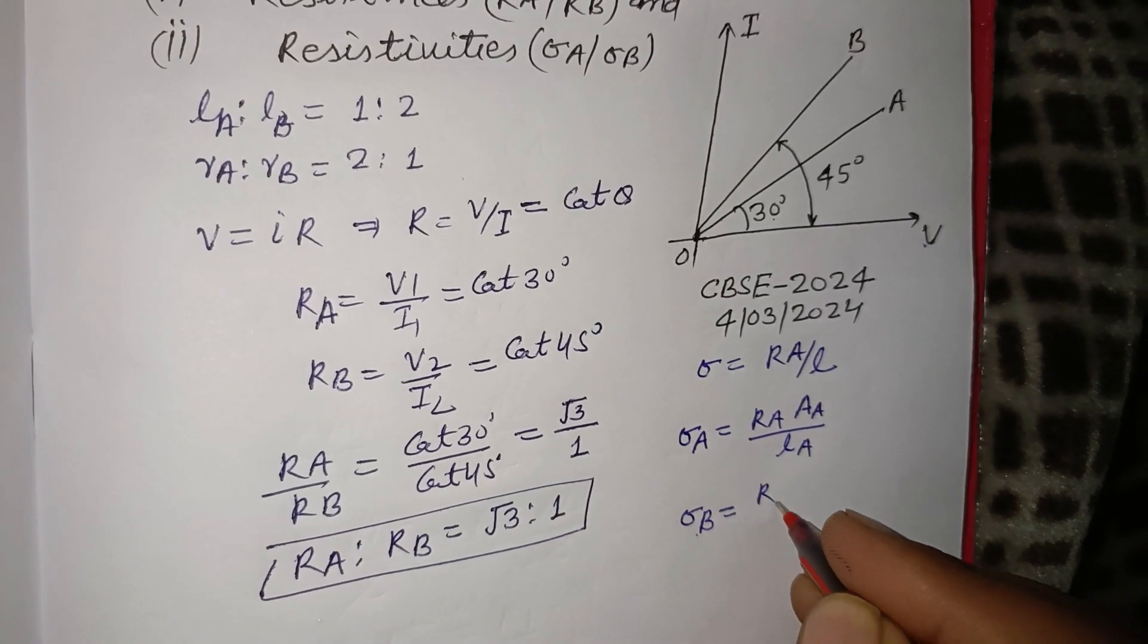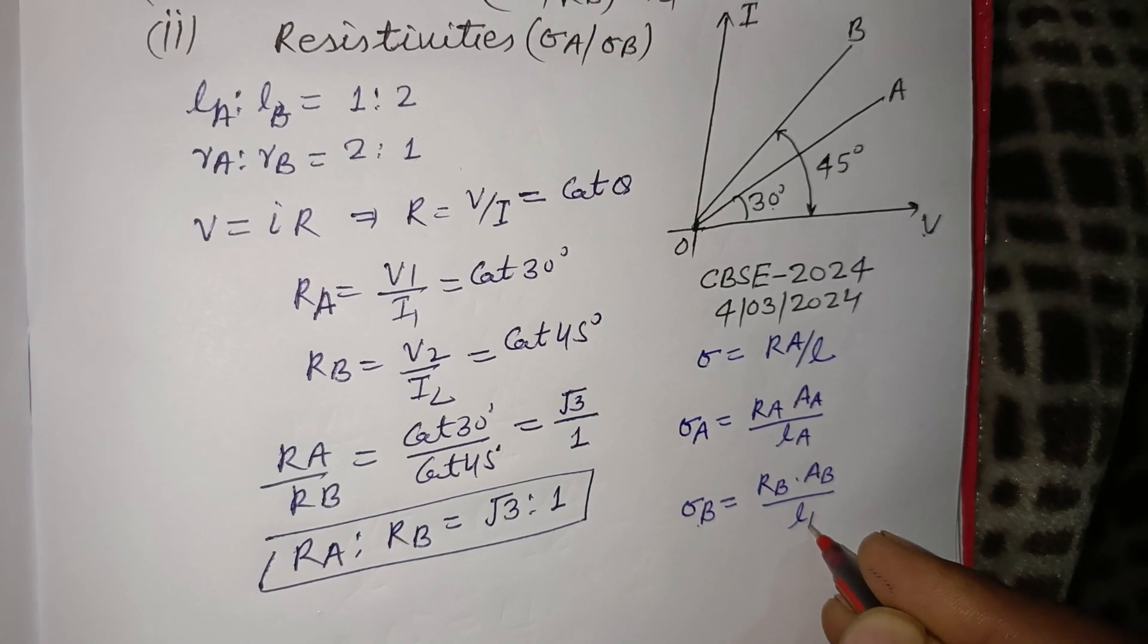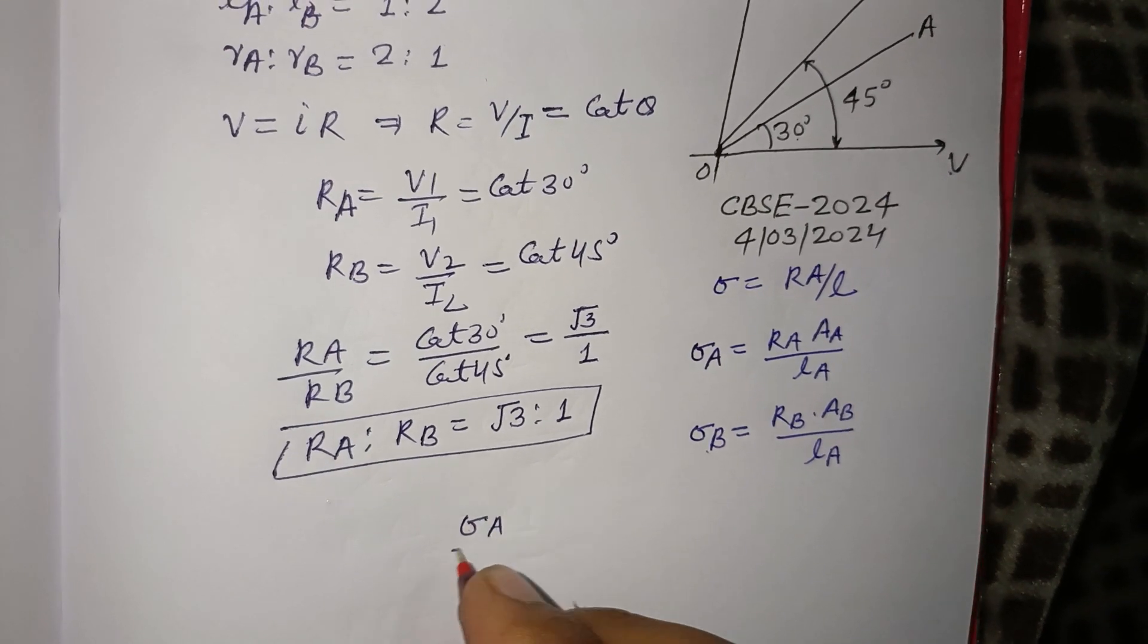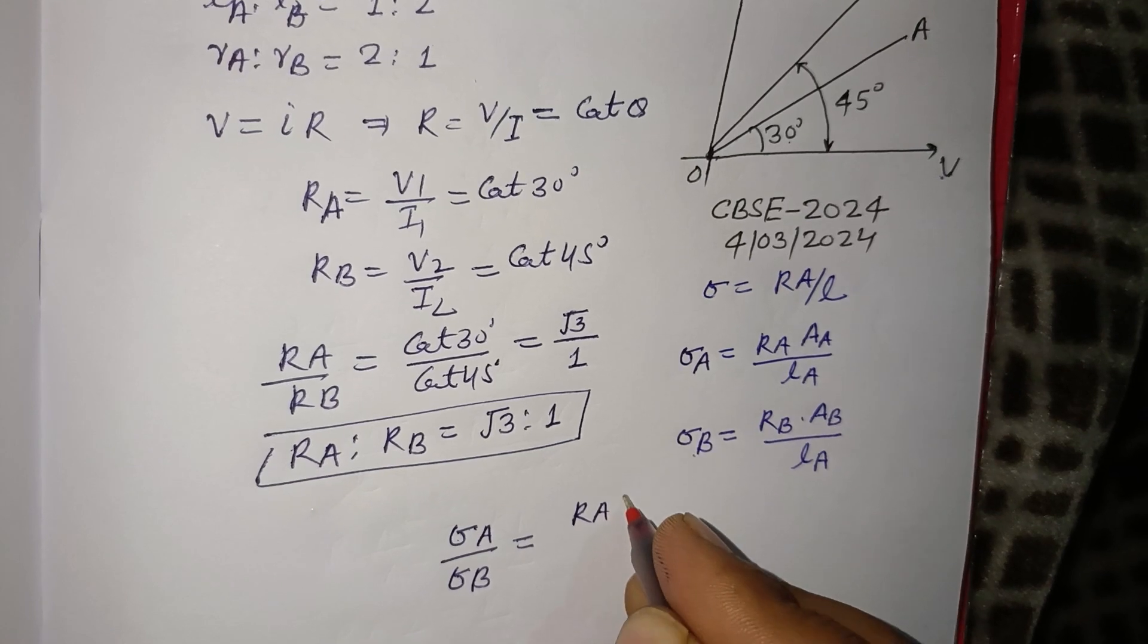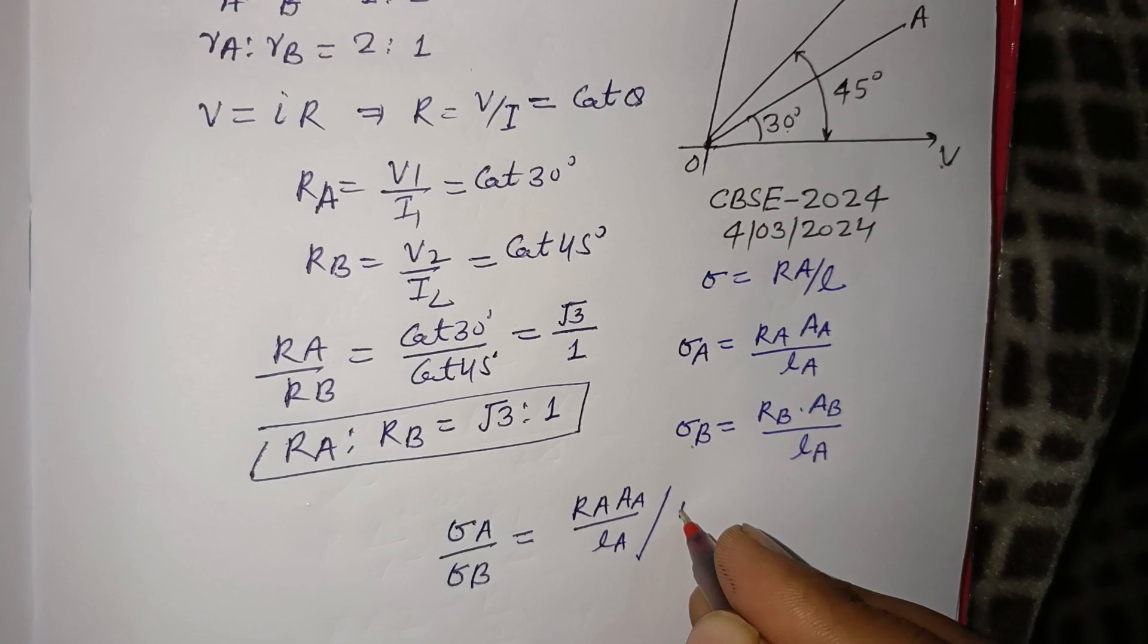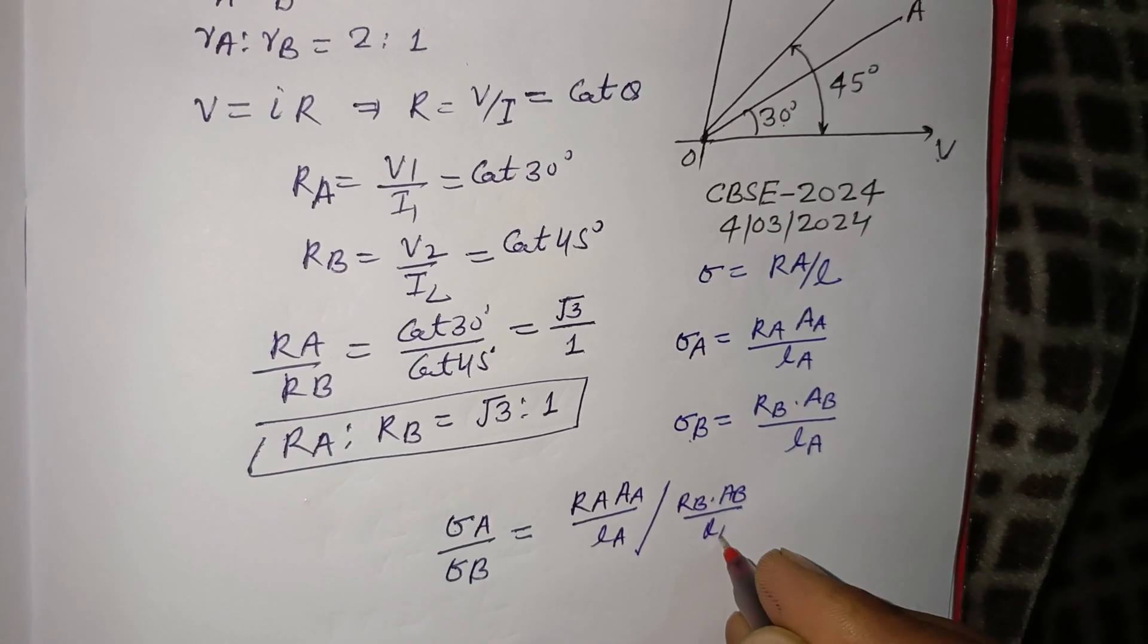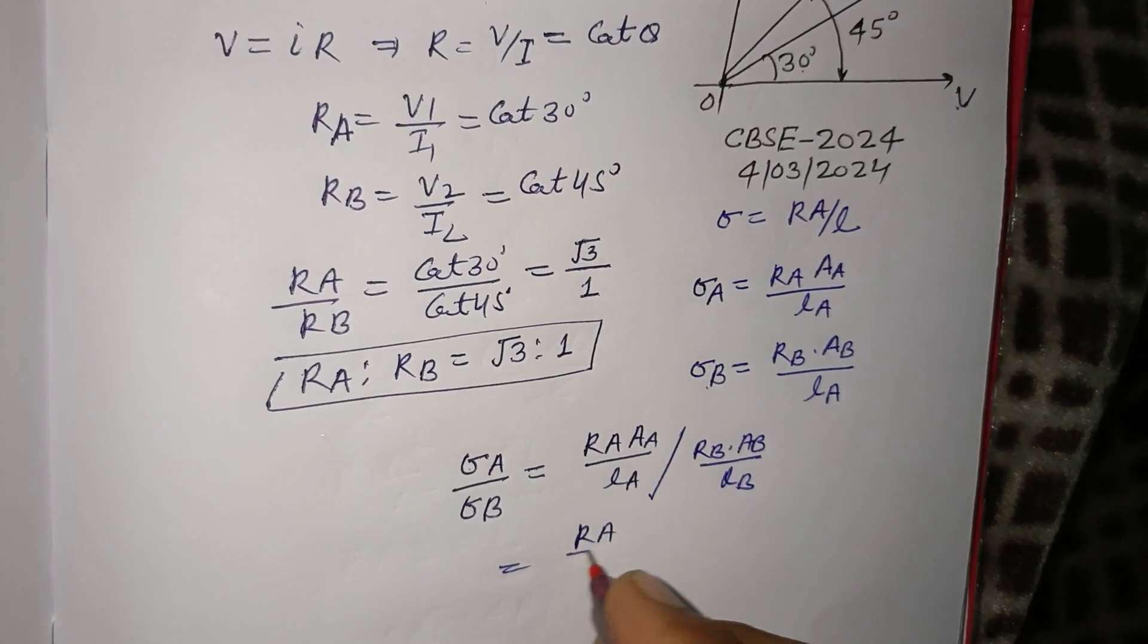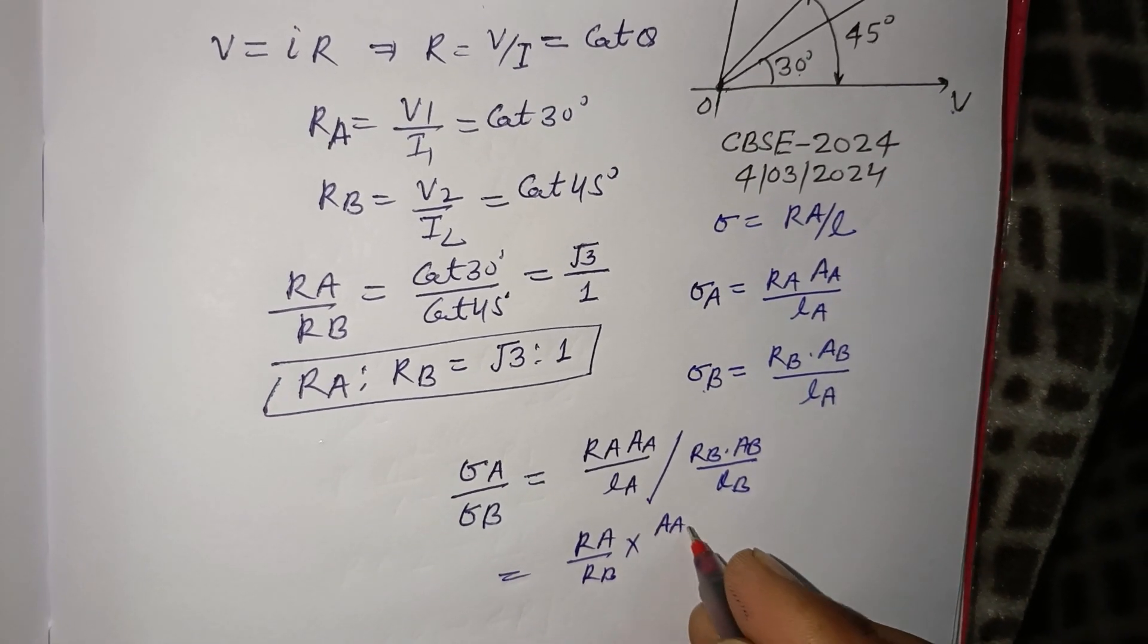Now σA/σB = (RA·AA/LA) divided by (RB·AB/LB). So we multiply this: RA/RB times AA/AB times LB/LA.